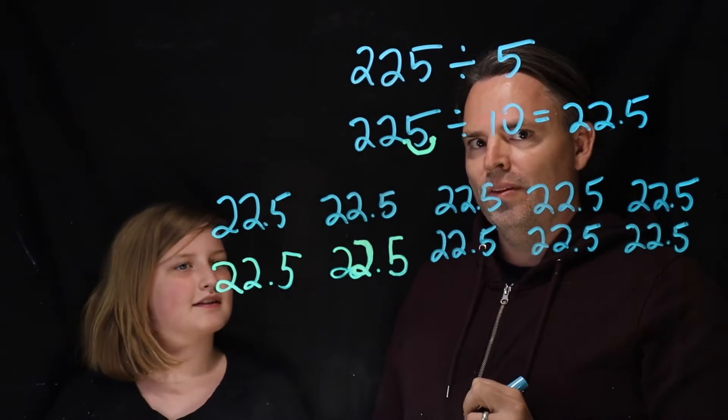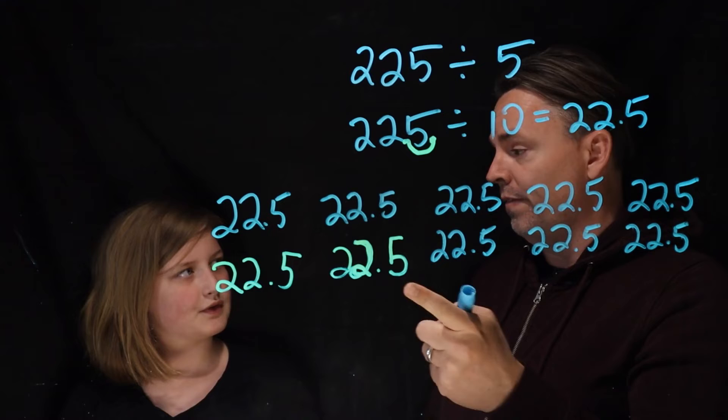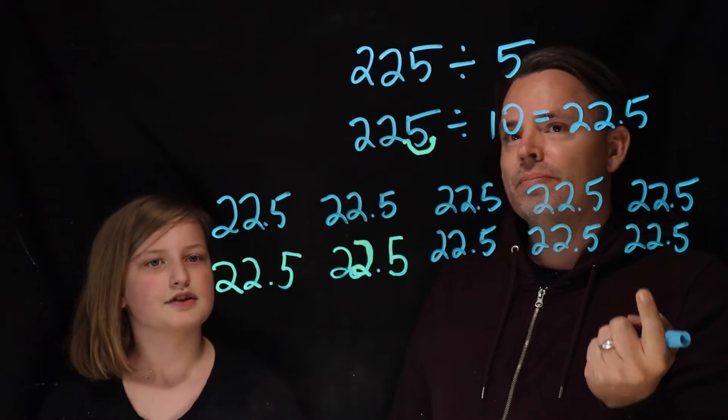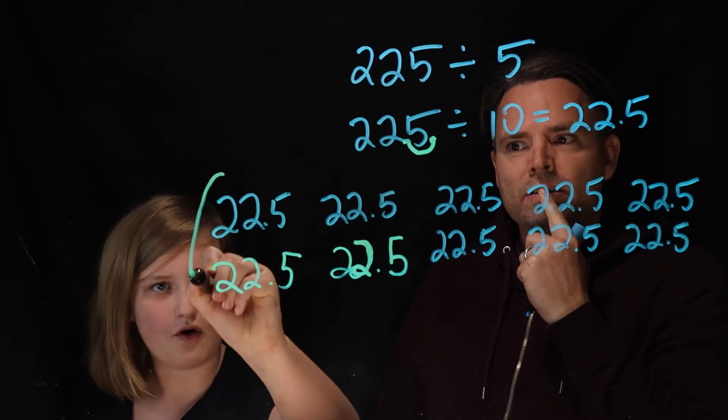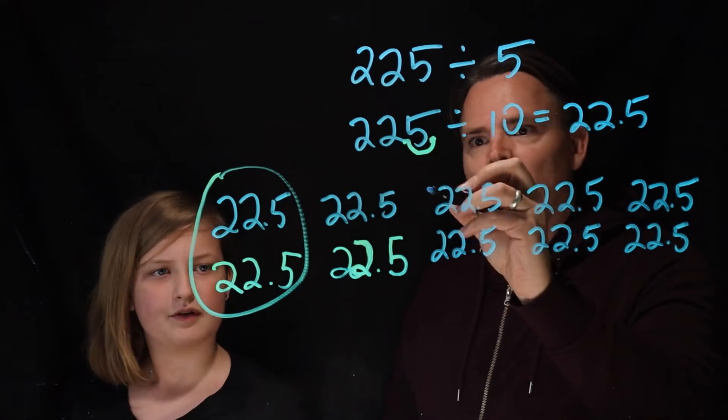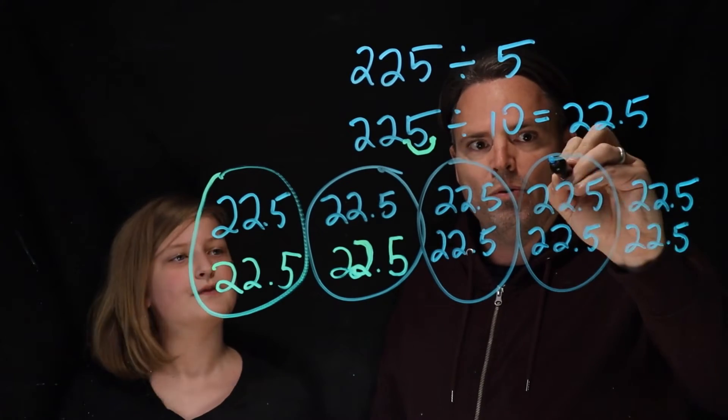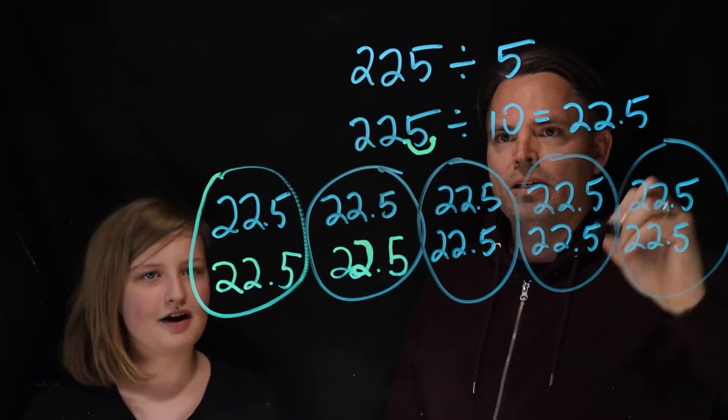So now we have 10 groups of 22.5, but we have too many, don't we? Yeah, so now we have to put these all together.